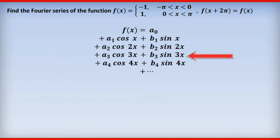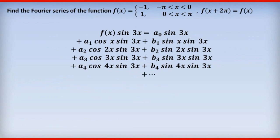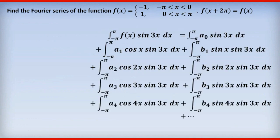So to do that, I notice that after the b₃, we've got sin 3x. So I'm going to multiply both sides of this equation by sin 3x, and I get this. Now I'm going to integrate both sides with respect to x between negative π and π, and I get this.